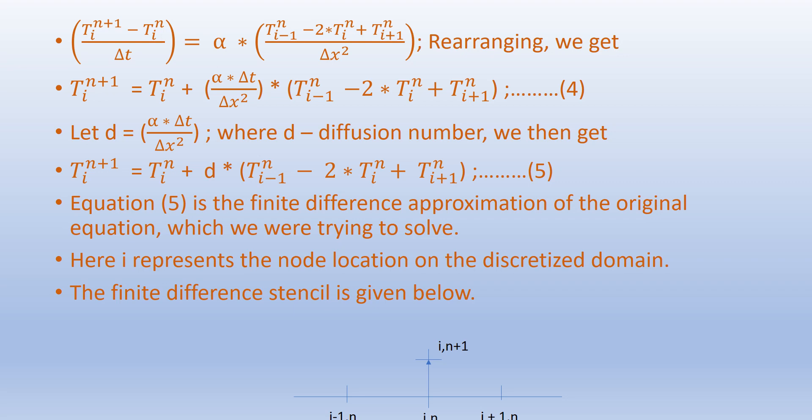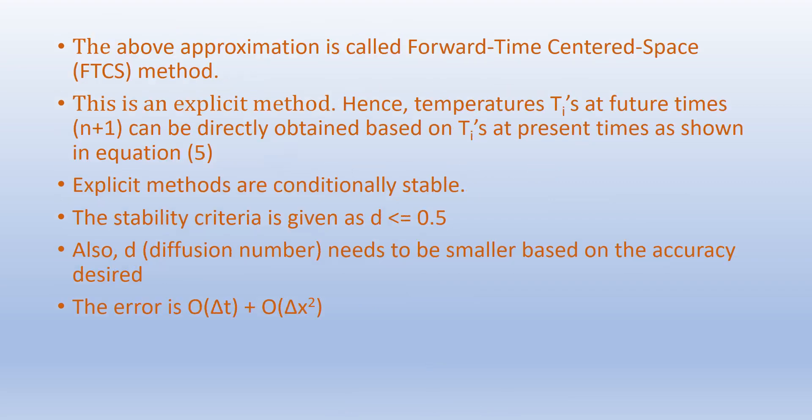Equation 5 is the finite difference approximation of the original equation we are trying to solve. The finite difference stencil shows that we typically know the temperature at locations i-1, i, and i+1 at time level n, and we are interested in finding the temperature at i at time level n+1. This approximation is called the Forward Time Centered Space, or FTCS, method.